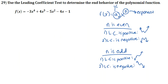Looking at our function, we can see that our leading coefficient is arranged properly, with the highest exponent on the left and the lowest on the right. So we know our leading term is -3x⁴. Looking at our n, which is our exponent, we can see that n is even — it's four.